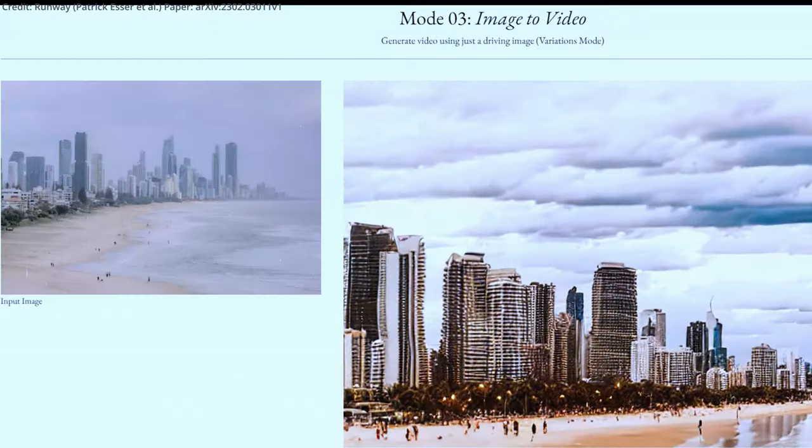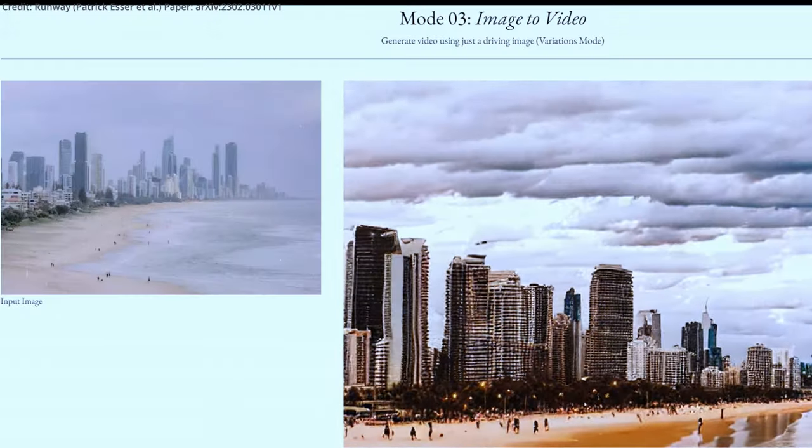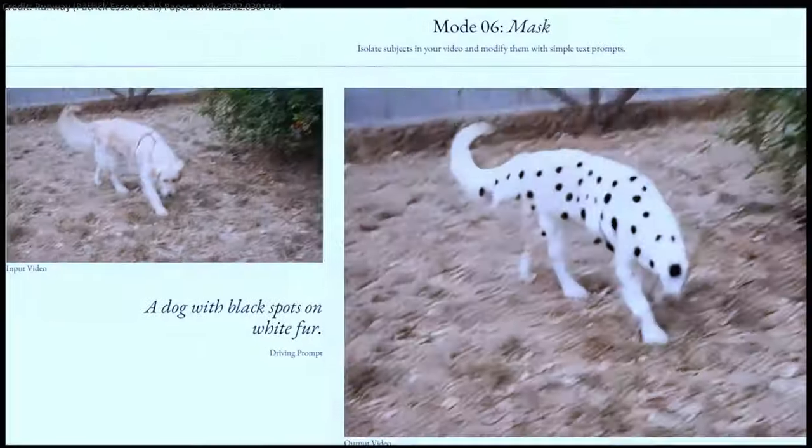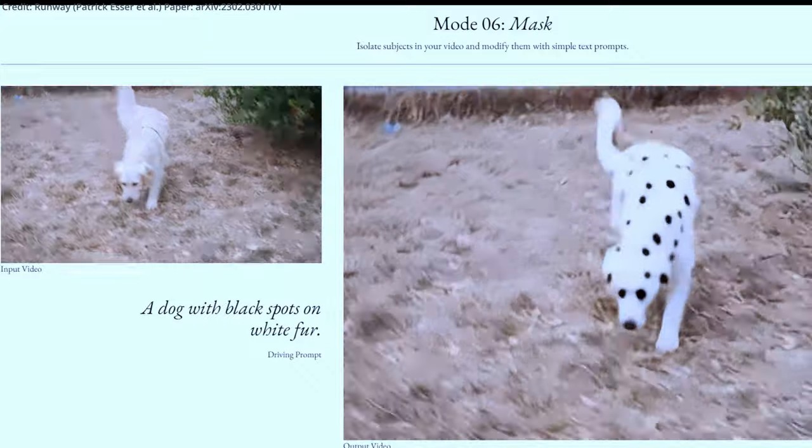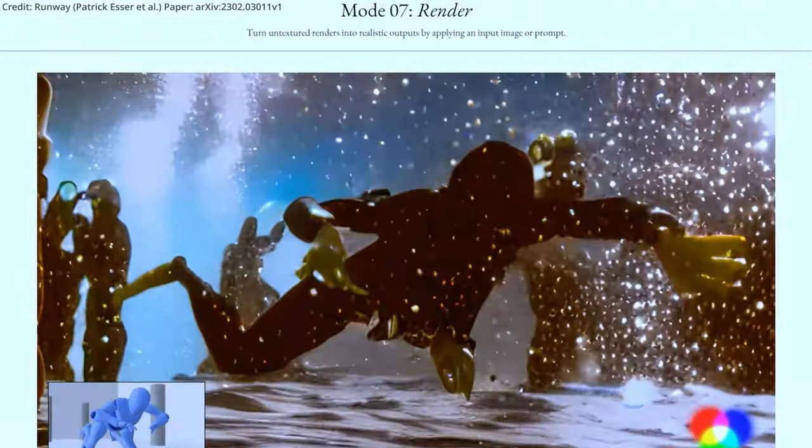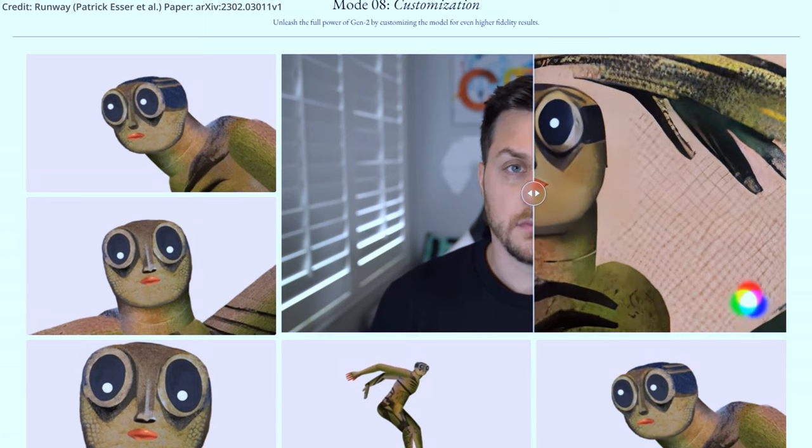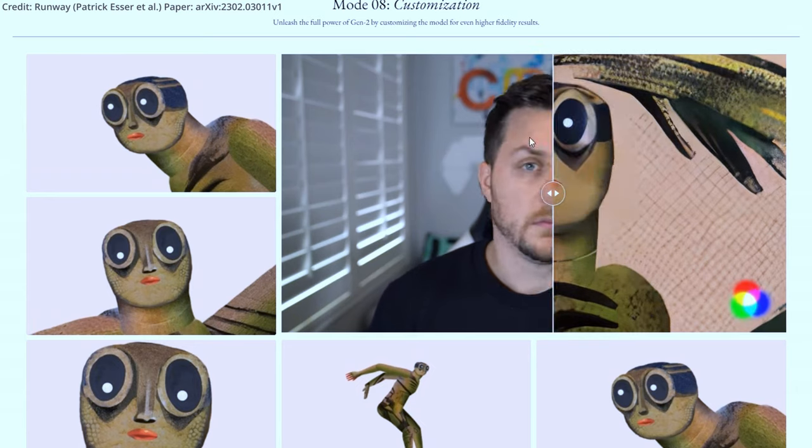It's worth comparing Runway's work to other text-to-video research from major players like Meta and Google. Their AI-generated clips are longer and more cohesive, but the advancements don't necessarily reflect the disparity in resources between these giants and the 45-person team at Runway.